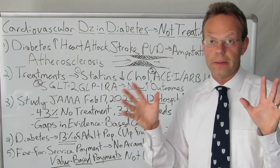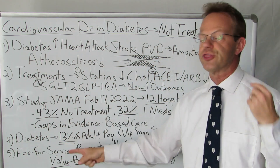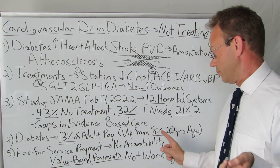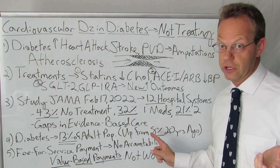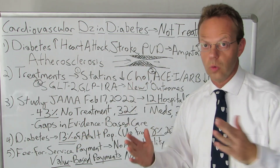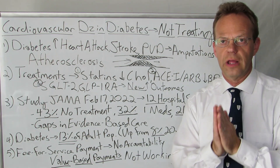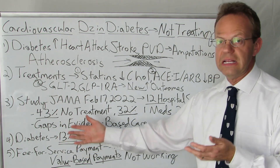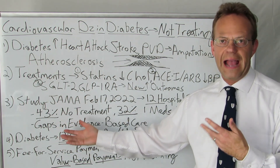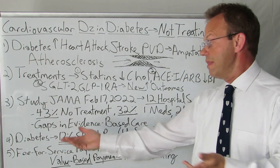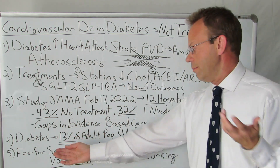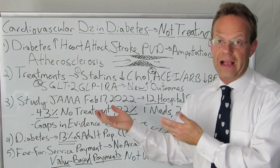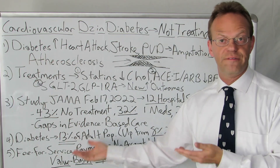This is a growing problem because the number of people with diabetes is growing. It is now 13% of adults in America — up from 8% twenty years ago, an over 50% increase — and it's only going to keep increasing. This is a huge problem for employer-sponsored health plans. Notably, 75% of these patients had actually been seen by a primary care physician or a cardiologist and still were not getting the treatment. So why is that?